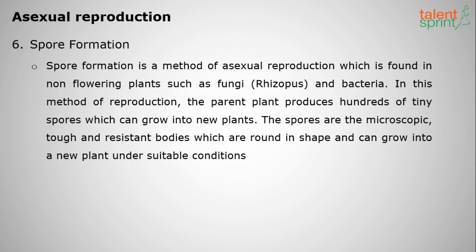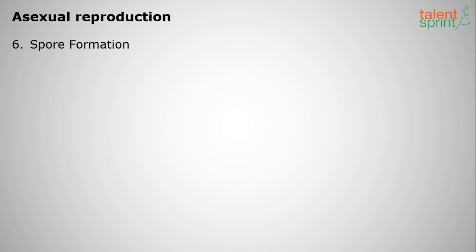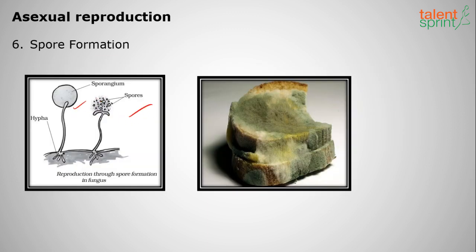The last method of asexual reproduction is spore formation, seen in fungi and bacteria. The parent plant produces hundreds of tiny spores which can grow into new plants. We commonly see this as bread mold — when bread is kept outside the refrigerator in normal atmosphere, spores form and new fungal plants grow on it. These spores are microscopic, tough, and resistant bodies, round in shape. In the figure you can see the spores, the sporangium, and a new plant on the bread mold. We can also see this on pickles.